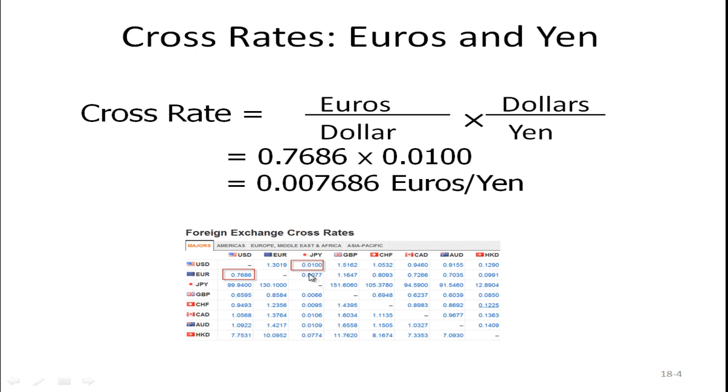And if you look right here, this is the euro. In fact, I should have highlighted that. This is the euro-yen exchange rate. It's 0.0077. They've just rounded off. So that's the exchange rate. So by taking the euros per dollar exchange rate, multiplying it by the dollars per yen, we got the euros per yen exchange rate.